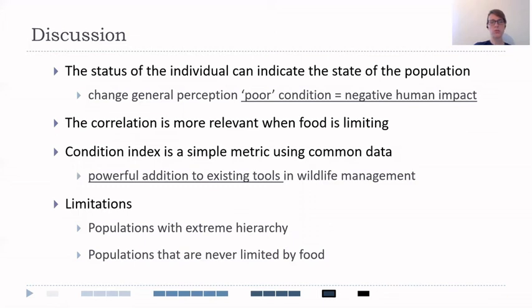Also, the correlation was more relevant when the food is limiting, which makes sense because then we have higher competition for the same food and the changes in the condition index can be more obvious.